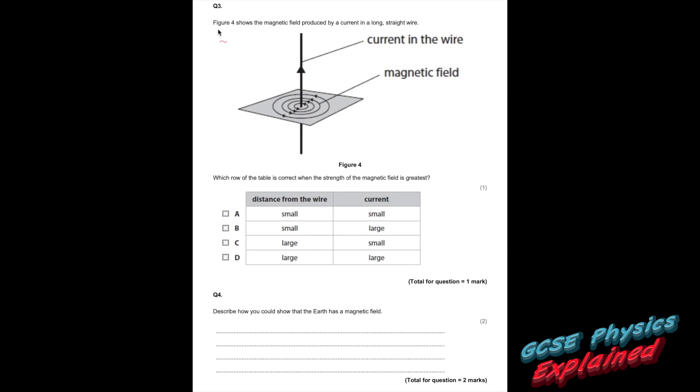Question 3. Figure 4 shows the magnetic field produced by a current in a long straight wire. Which row of the table is correct when the strength of the magnetic field is greatest? Well, the magnetic field is always greatest in the middle, especially when there's a strong current.